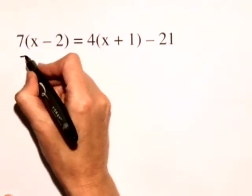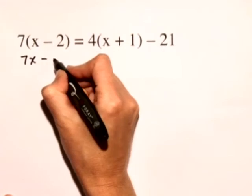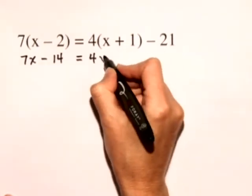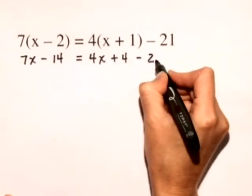So first we'll distribute, and we have 7x minus 14 is equal to 4x plus 4 minus 21.